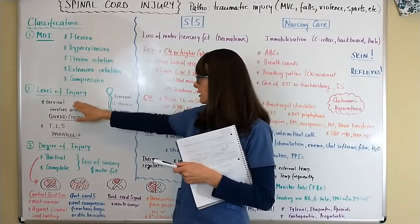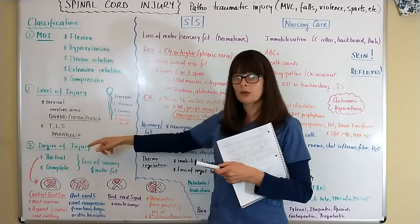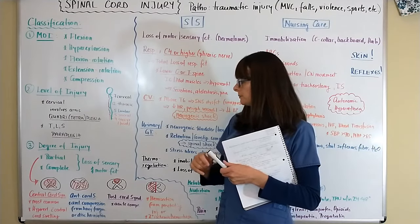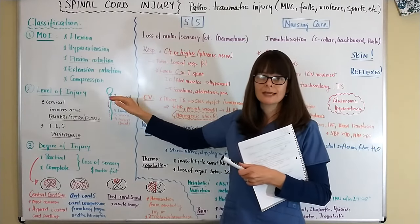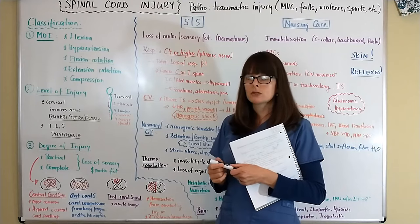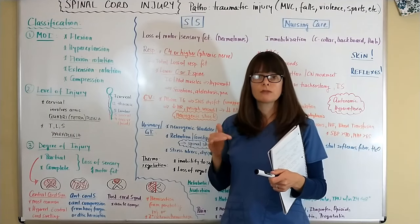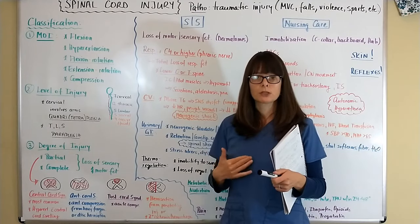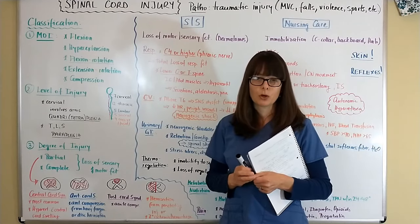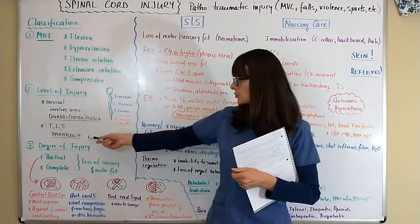Cervical injuries from C1 through C7 usually involve the arms and result in quadriplegia, also called tetraplegia. The higher the injury, the worse it is. There's a saying: 'C3, 4, and 5 keep the diaphragm alive.' If there's an injury at those levels, it may impair the patient's ability to breathe, and they may need to go on a ventilator — potentially ventilator-dependent for the rest of their life, depending on whether it is a partial or complete spinal cord injury.